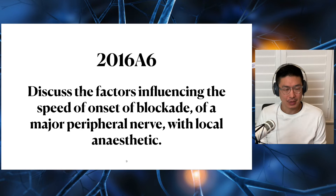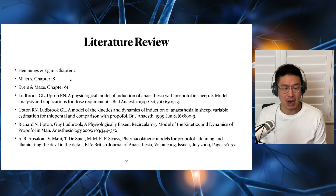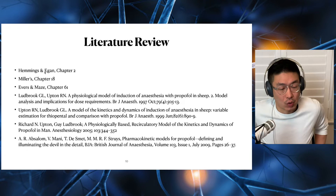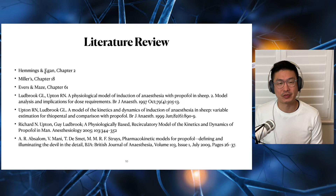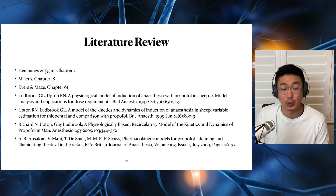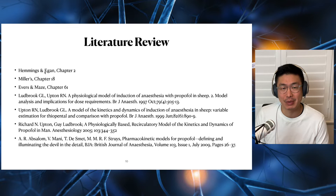This is the literature — all added to the Patreon page. I don't expect you to read all chapters and articles; it's more as a reference so you can see where I've gotten my ideas from. Sources include Hemmings and Egan Chapter 2, Miller's Chapter 18, Evers and Mays Chapter 61 — which is really good for discussing how speed of injection affects onset — and articles primarily by Ludbrook and Upton, who published many articles on physiological models of IV induction agents. There's also an article by Absalon on TCI with some useful numbers.